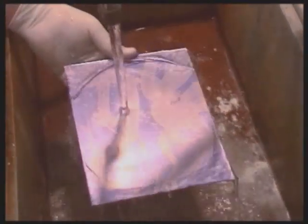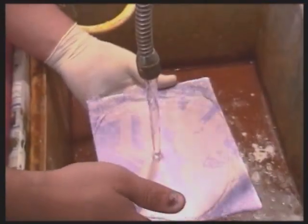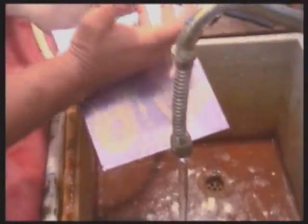Develop until you can see the copper in the dark areas and clearly hear the sponge rub over the aquatint, as though it were sandpaper.